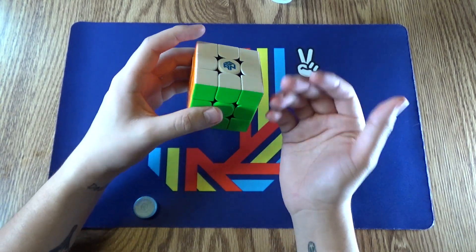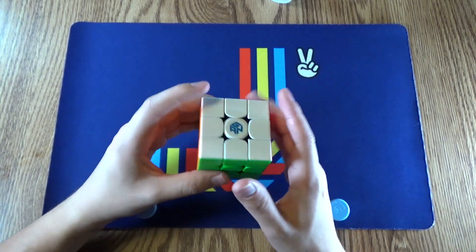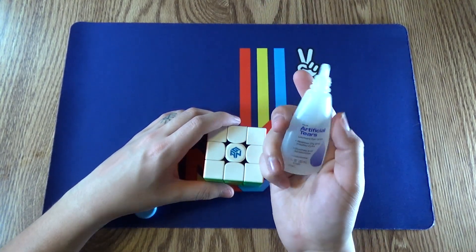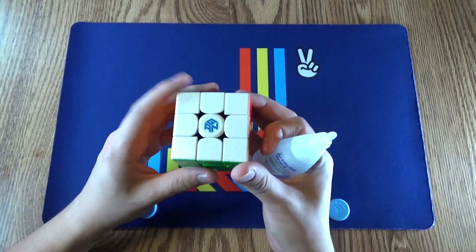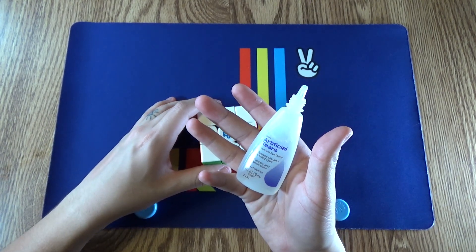It's just on the edge pieces where it wants to drag a little bit. And personally, I don't like a cube that drags too much, but I know I'm just very picky. But if you have eyedrops around the house and you don't have lubricant because you spent way too much money on the GAN 11M Pro, definitely try out some eyedrops.